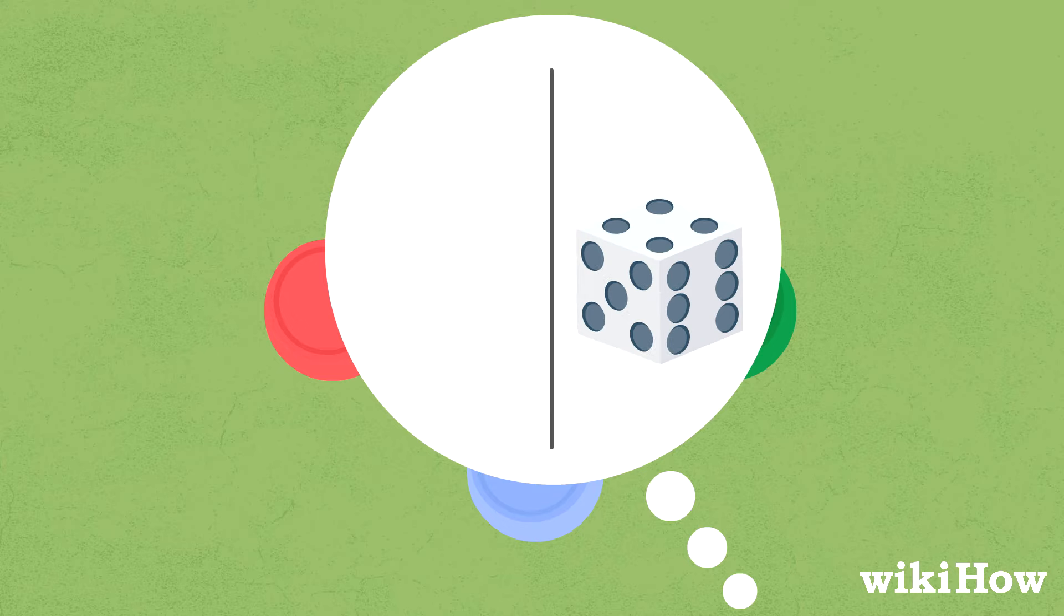Then, the first player states a bid, consisting of one of the die faces: one, two, three, four, five, or six, and a quantity.